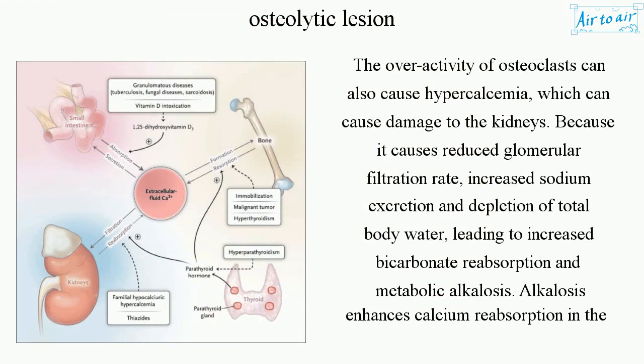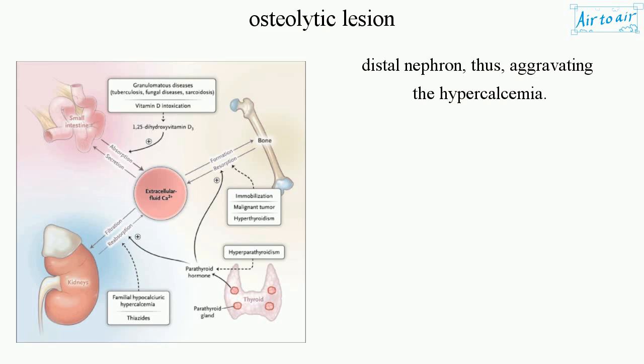The overactivity of osteoclasts can also cause hypercalcemia, which can cause damage to the kidneys because it causes reduced glomerular filtration rate, increased sodium excretion and depletion of total body water, leading to increased bicarbonate reabsorption and metabolic alkalosis. Alkalosis enhances calcium reabsorption in the distal nephron, thus aggravating the hypercalcemia.